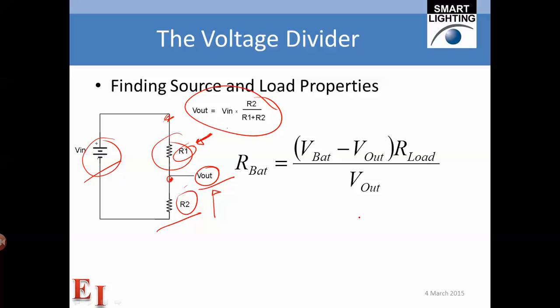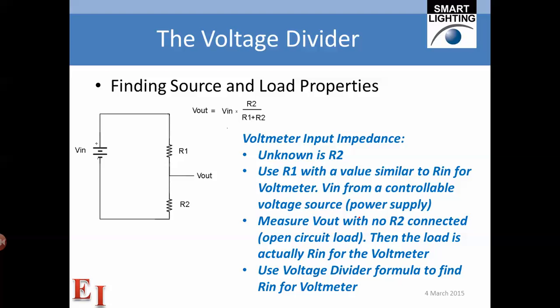It is just algebra. If we want to find load properties such as the voltmeter input resistance, the unknown is R2. We use a known resistance R1, a known voltage Vin from a controllable voltage source, and measure Vout with no load connected to establish the exact input voltage.